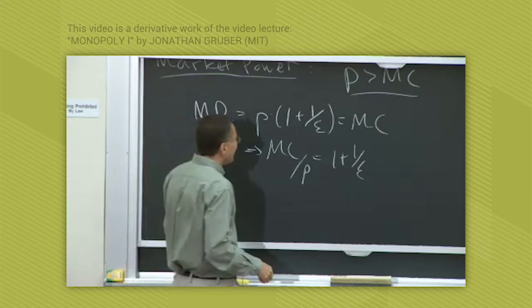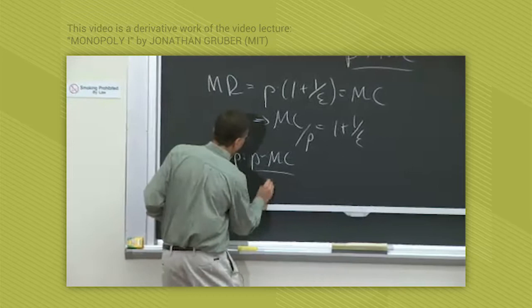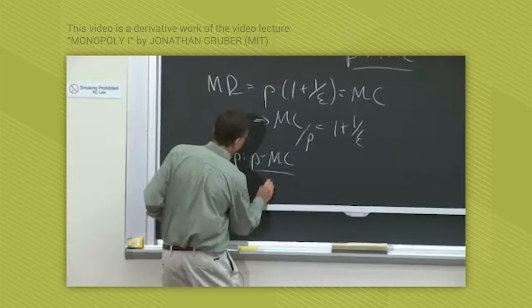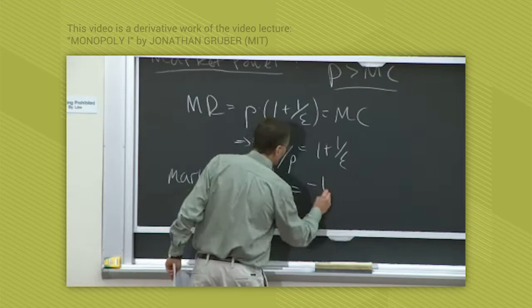Now let's define the markup as price minus marginal cost, how much money you make on the next unit. You sell for p, you get marginal cost, which is the money you make on the next unit. If you define the markup, p minus mc over p, that's the percentage markup. Then you can see that that markup equals minus 1 over epsilon.